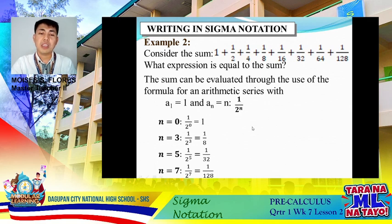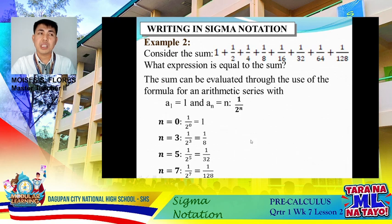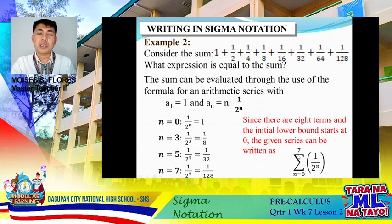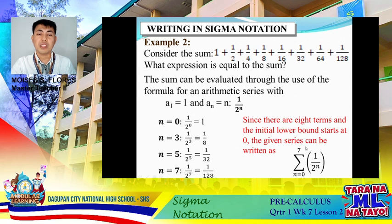Even though we have 8 terms, we started our lower bound at 0, so it goes from 0 to 7. Our series is written as the summation of 1/2ⁿ as n goes from 0 to 7. Take note: it doesn't mean the first term's index must always be 1 — we started substituting from 0 and ended at 7, which is the last term.